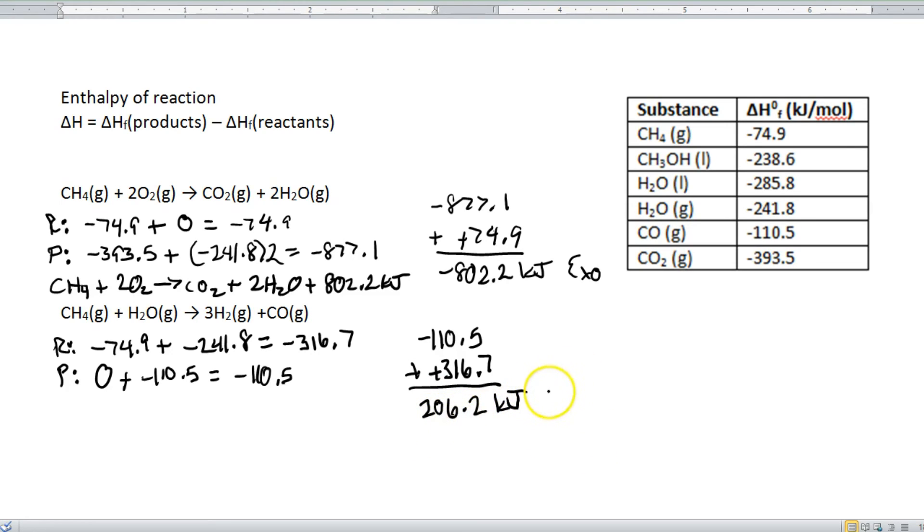This is a positive number, which means that this is an endothermic reaction. So now, when we go to step four and write the balanced equation, since this is endothermic, we're going to put our energy as a reactant. So here we go. CH4 plus H2O plus our energy, 206.2 kJ yields 3H2 plus CO.